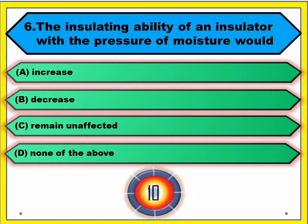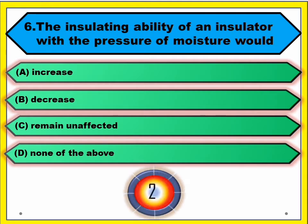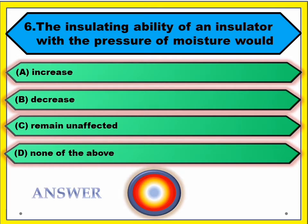Question number six: the insulating ability of an insulator with the presence of moisture. Answer: decreases.